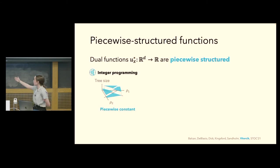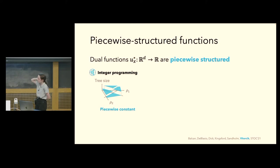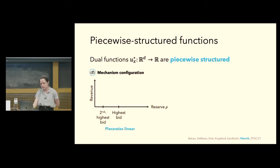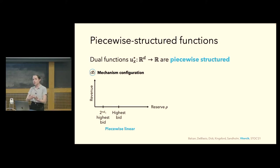This is where the notion of a dual function comes in handy. Rather than fixing parameters rho and varying input x, we fix x and vary rho, getting utility as a function of the parameters — so u_x(rho) equals u_rho(x). Collecting all such functions u_x, I denote it U* and refer to it as the dual function class. What's really nice about these dual functions is they have a simple Euclidean domain, the set of all parameters, and they often have ample structure we can use to bound the complexity of the primal function class U.